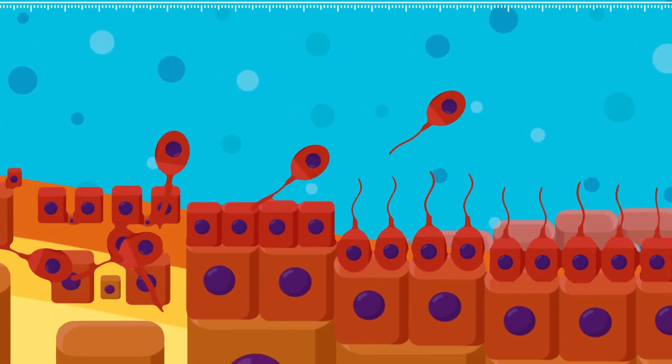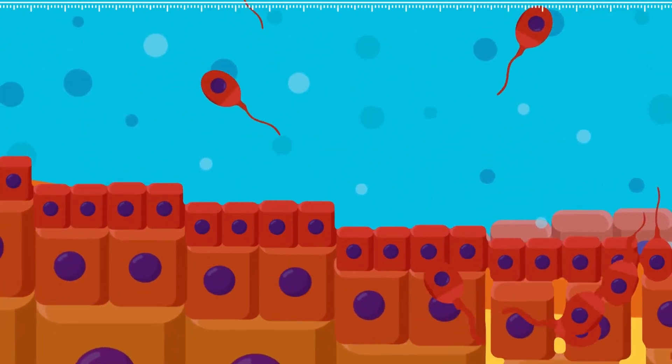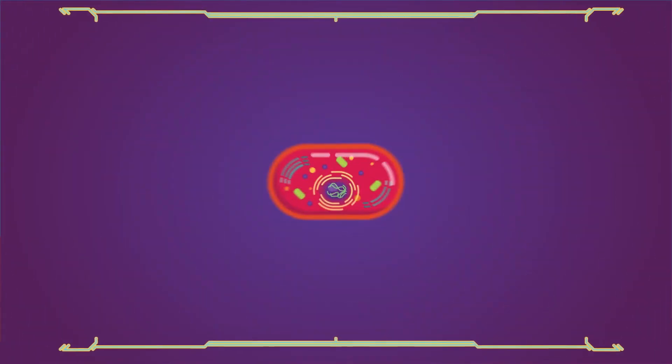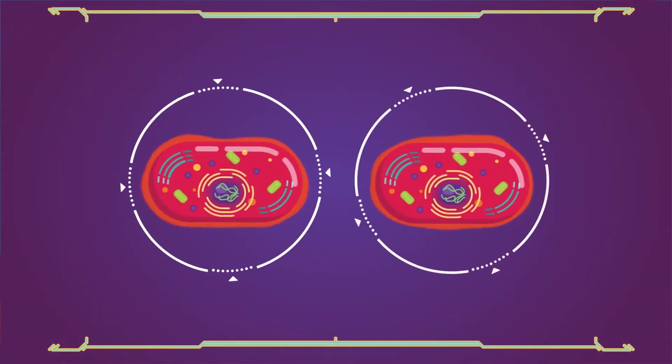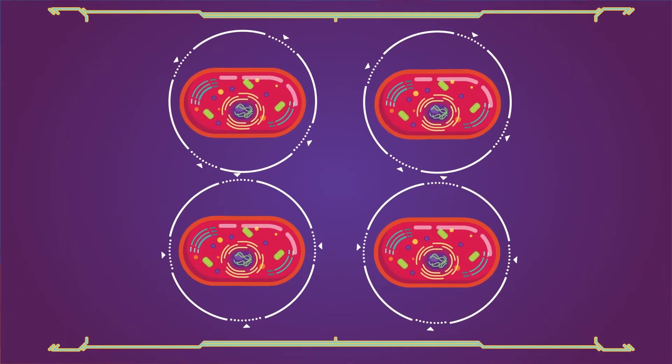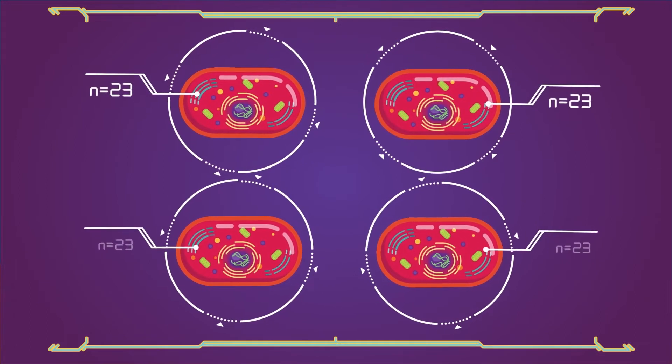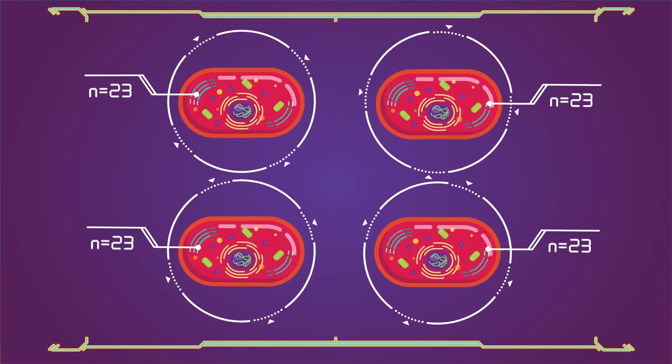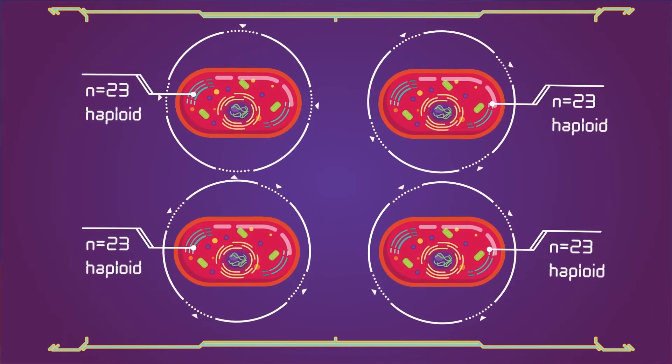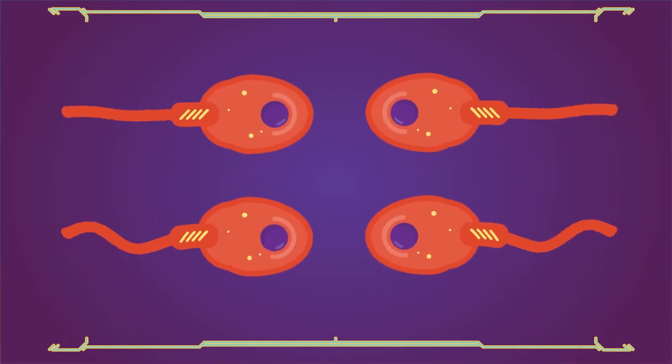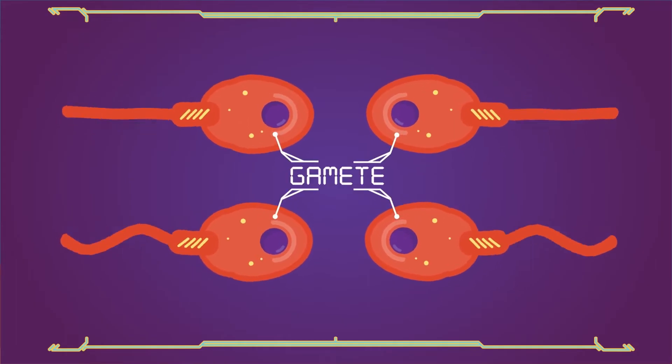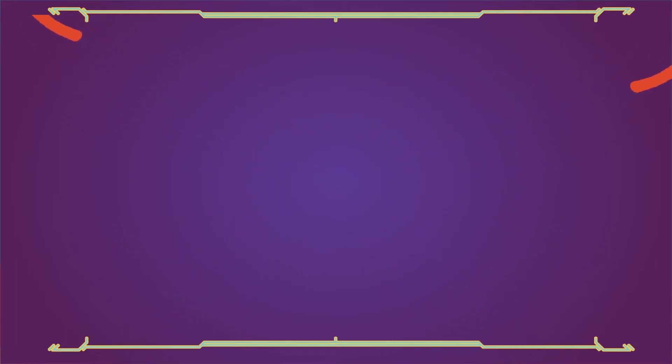These cells are our sex cells, sperm in males, eggs in females. During meiosis, one cell divides twice to form four daughter cells. These four daughter cells only have half the number of chromosomes than the parent cell. They are haploid. Meiosis takes place in germ or sex cells called gametes, eggs in females and sperm in males.